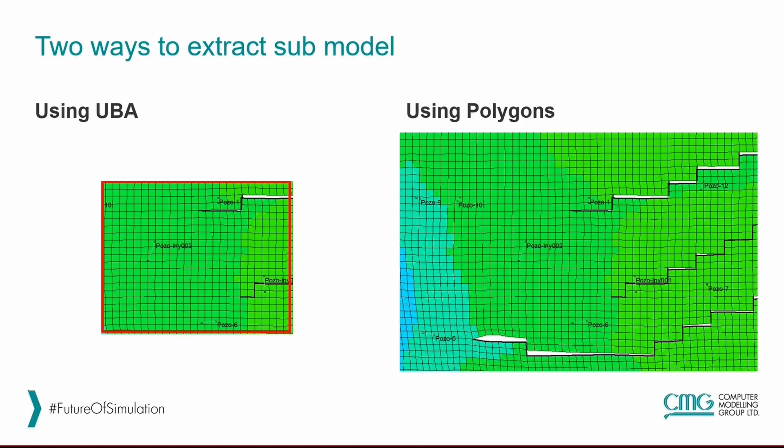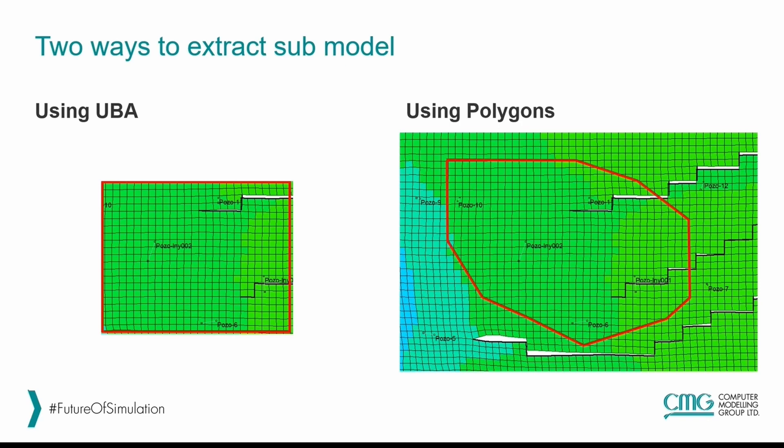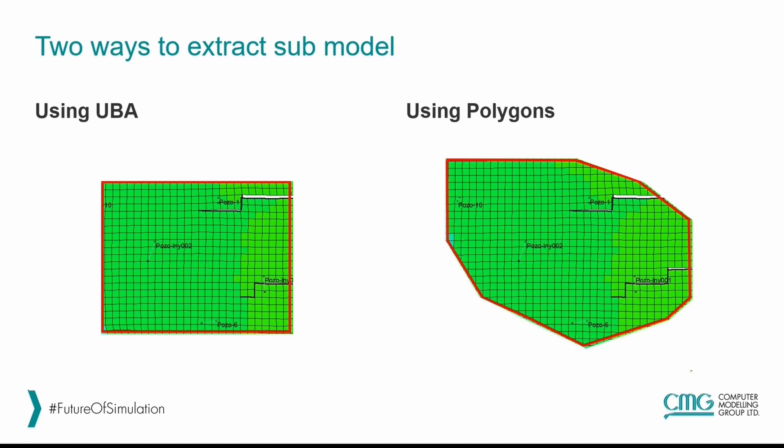The other technique is using polygons. With this approach, you can draw a polygon in the reservoir with any shape you want and then extract the submodel from it. The result will be a non-rectangular shaped submodel.